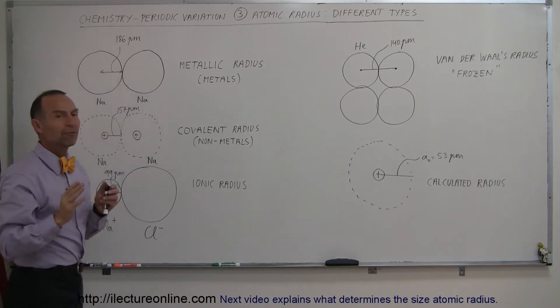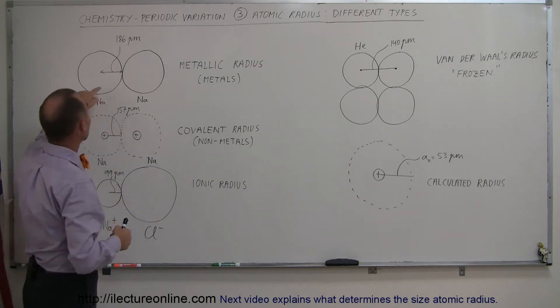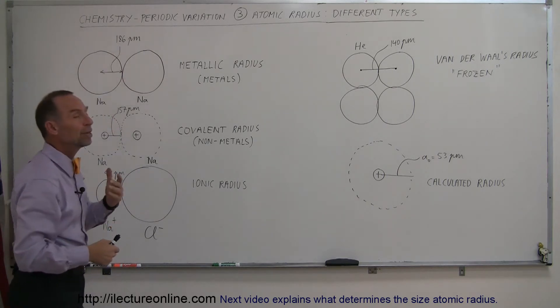And so typically for the metals, we can find what we call the metallic radius, and in the case of sodium, that would be 186 picometers.